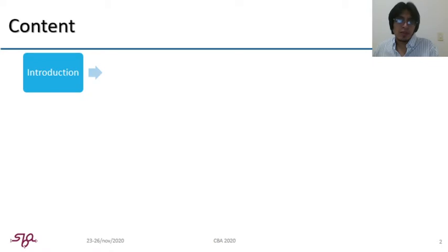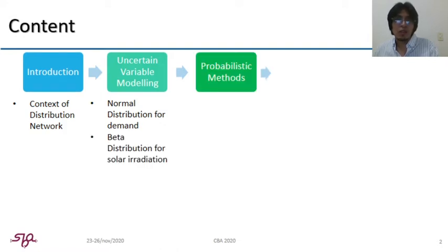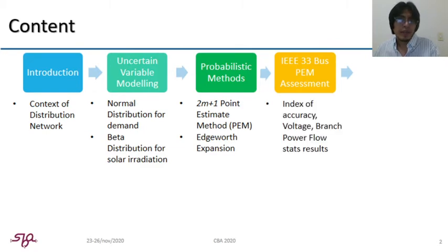This presentation consists of five sections. First, a brief introduction on the context of distribution networks. Second, uncertain variable modelings for demand and solar irradiation. Third, a general step implementation for 2M plus 1 point estimate method, as well as the Edgeworth expansion to obtain probability distribution curves. Then, the method is applied to the IEEE 33 bus modified with PV generation in order to evaluate its performance.